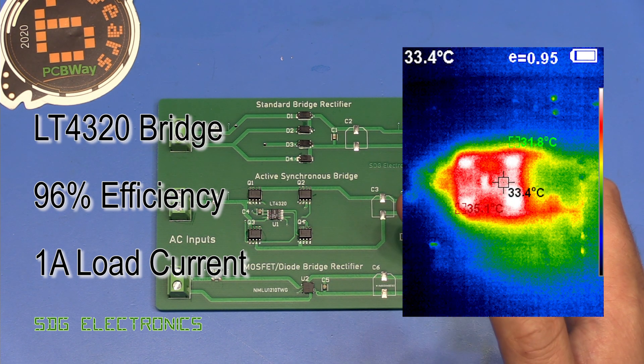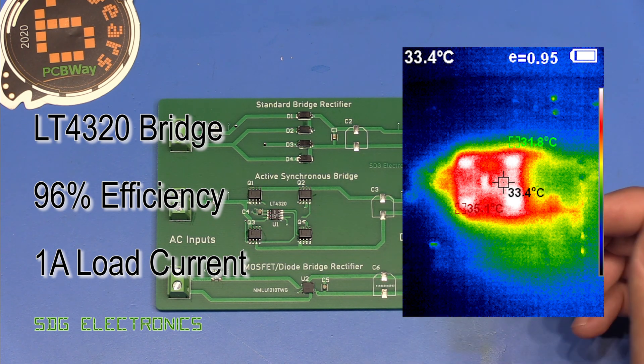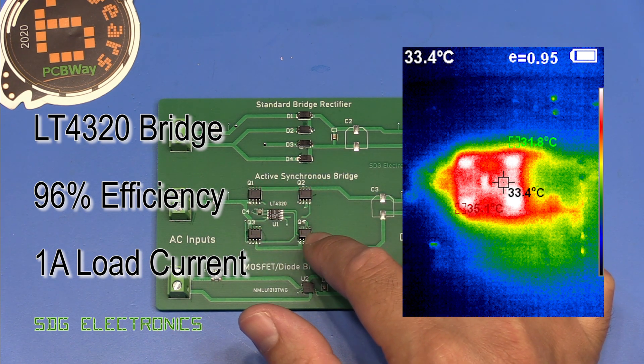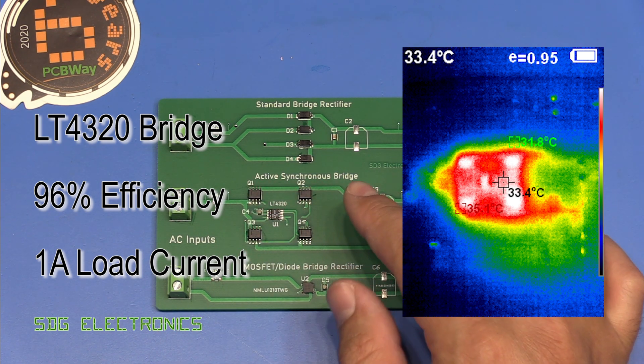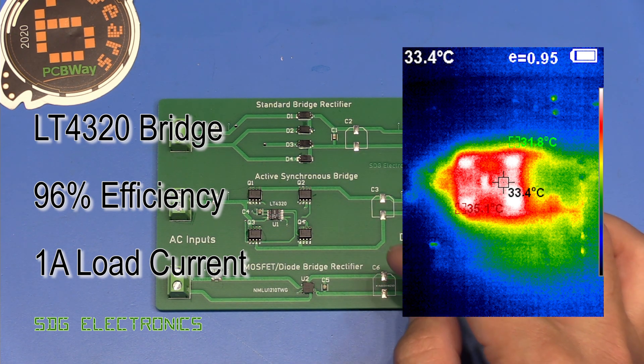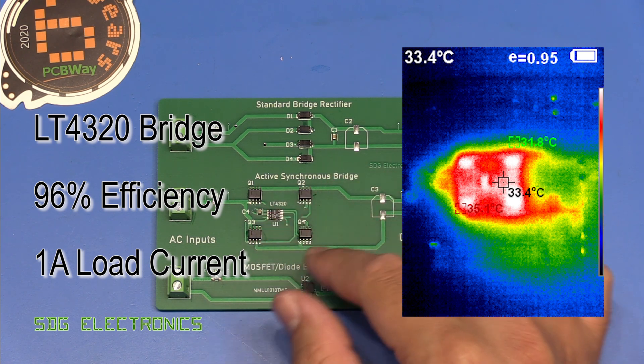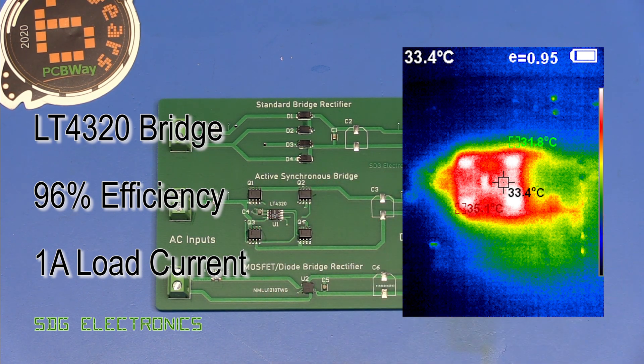And then finally, our active synchronous bridge, or the ideal diode, giving us about 96% efficiency. Now, because this is spread over four MOSFETs, quite chunky SOIC package MOSFETs, we weren't seeing temperatures very high. It was in fact only 34 degrees C. So really very low heating in these devices. We're losing about 4% of the power in those switching devices.